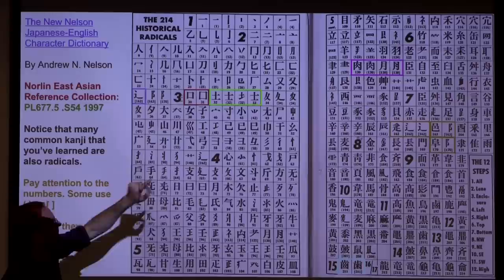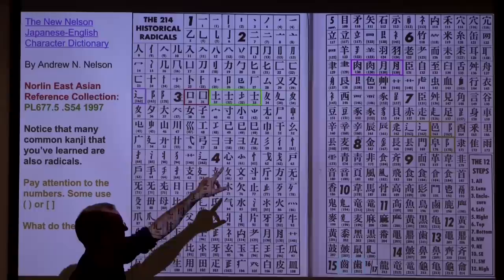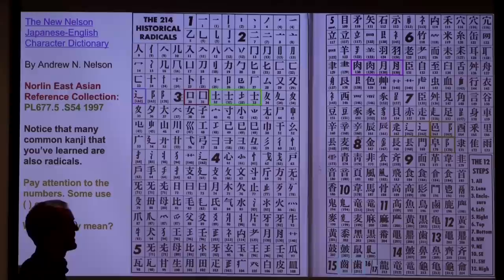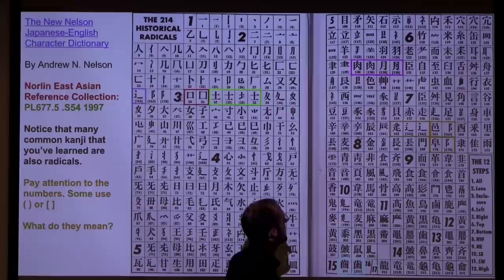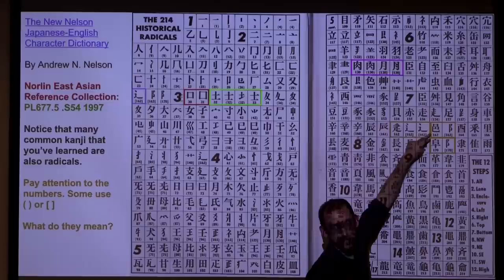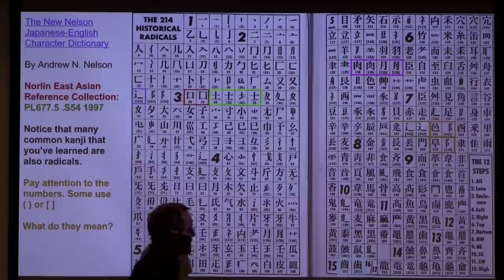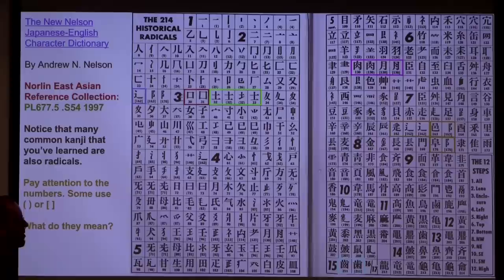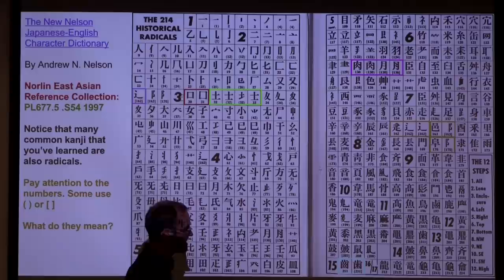Look at radical 130, 'niku' — there are a few slight changes there. What's really confusing about the variants is that one of them looks like the kanji for moon. And remember: 'kozatohen' and 'ozato' — here's what they look like without their variations. This chart, if you spend time with it, starts to make a little more sense, but you have to figure out what it's trying to tell you. It's a little obtuse, but it has all the information you need.